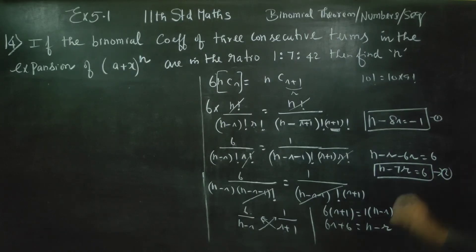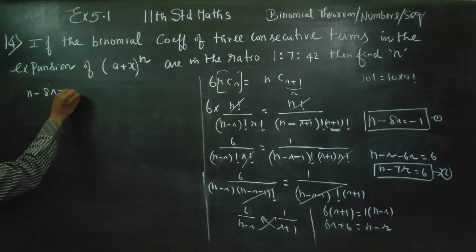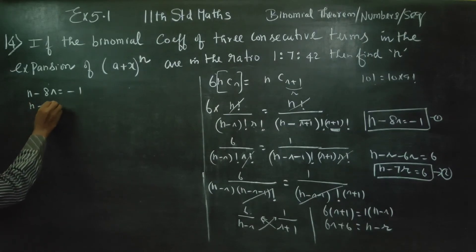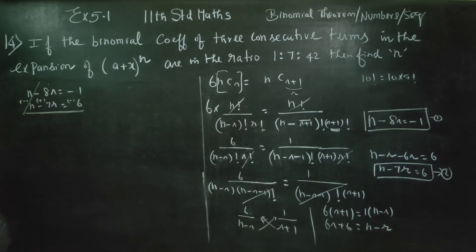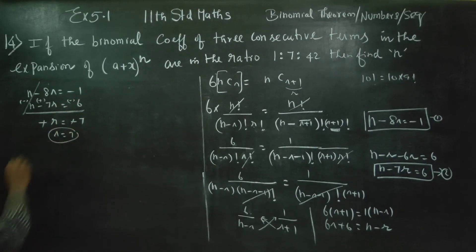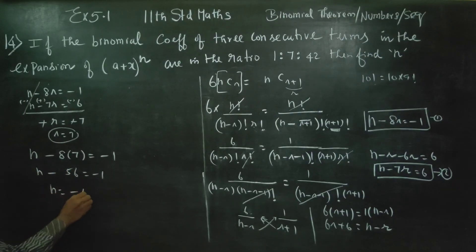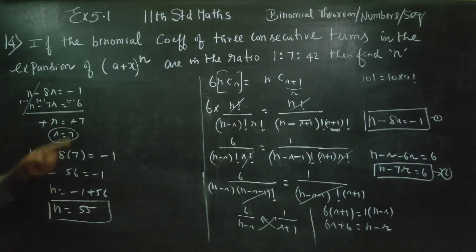We shall solve equation 1 and equation 2 simultaneously. Equation 1: n minus 8r equals minus 1. Equation 2: n minus 7r equals 6. Subtracting, we get minus r equals minus 7, so r equals 7. Substituting back: n minus 8 times 7 equals minus 1, so n minus 56 equals minus 1, giving n equals 55. This is the final answer. Thank you.